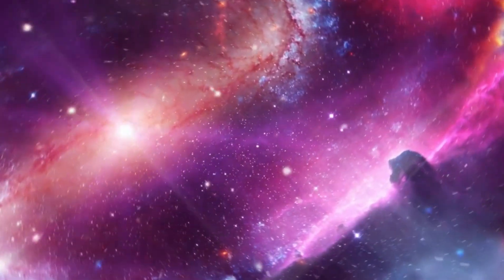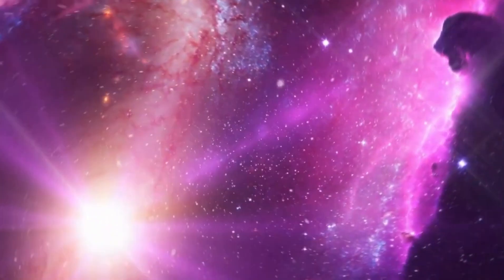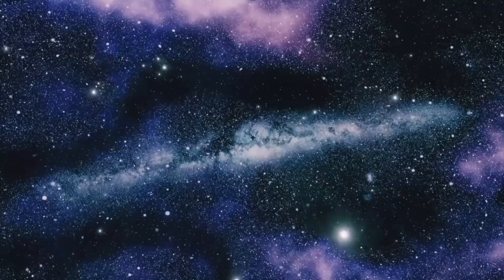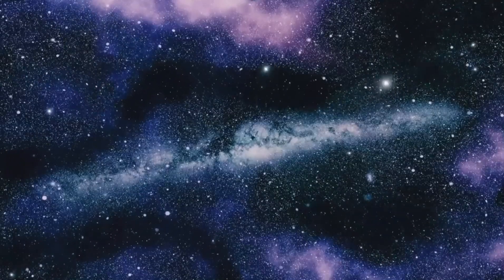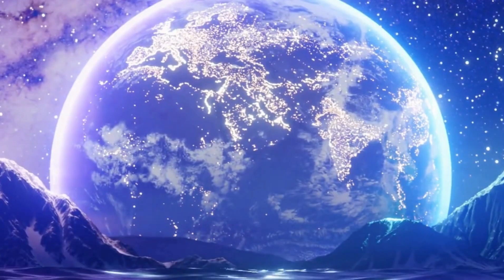Almost certainly, one side of the planet is constantly bathed in light, while the opposite side remains in endless darkness. Now, let's discuss Proxima Centauri, the star that Proxima b orbits.